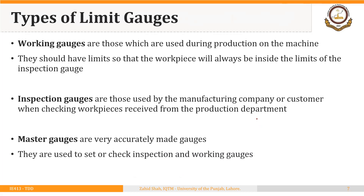There are different ways to classify limit gauges. One way is to classify them based on where they are used: working gauges, inspection gauges, and master gauges. Working gauges are used during production on the shop floor to check the conformance of parts as they are being made. Inspection gauges are used by the manufacturing company or customer when checking workpieces received from the production department, so they have a more specific use compared to working gauges.